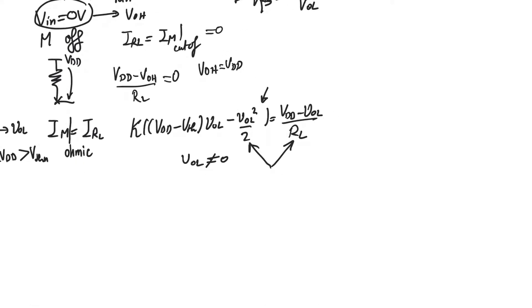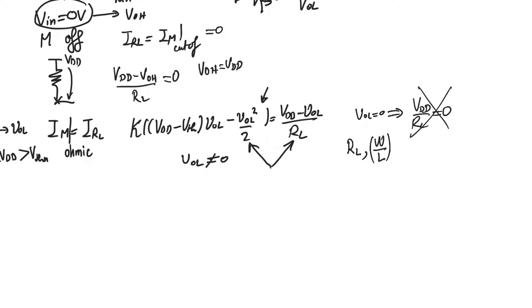Let's look at the equation for V_output_low in more detail. Since V_output_low is non-zero, we lose headroom from the noise margin, but we can control its value. We have two design parameters: RL, the value of the resistor, and W/L, the aspect ratio of the transistor. Expanding K gives μ_N × C_oxide × (W/L); since μ_N and C_oxide are technology parameters, the only design parameter we control is W/L.